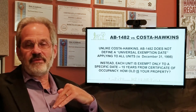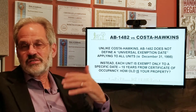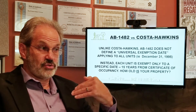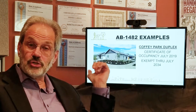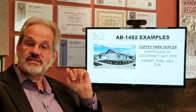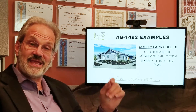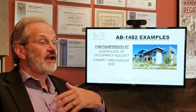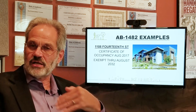Unlike Costa-Hawkins, AB 1482 does not set a definite date after which you're exempt. Costa-Hawkins set December 31st, 1995 — everything after that was exempt. Instead, every single property is specific to a date based on how old it is. For example, a duplex in Coffee Park got a certificate of occupancy in July of 2019, meaning it is exempt through July of 2034. A larger apartment complex on 14th Street got a certificate of occupancy in August of 2017, meaning it is exempt through August of 2032.